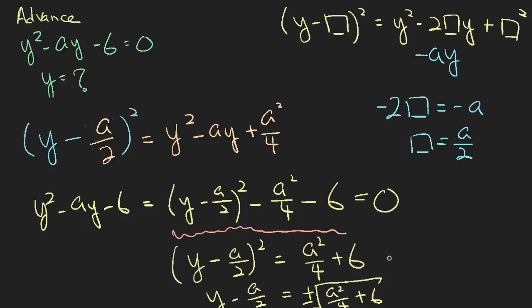From here, we can see that y equals plus minus square root of a squared over four plus six, plus a over two.